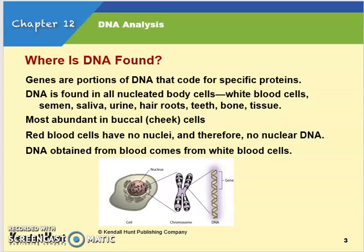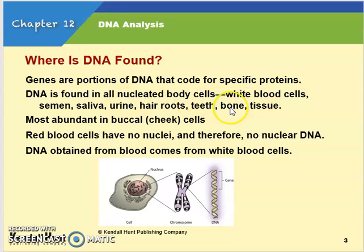Now that we've reviewed DNA, let's talk about where it is found. Genes are portions of the DNA that code for a specific protein, and DNA is found in nucleated body cells — cells with a nucleus. Those include white blood cells, semen, saliva, urine, hair roots, teeth, and bone and tissue. The most abundant are in your buccal or cheek cells. The nucleus is where the DNA is located, and DNA obtained from blood comes from white blood cells, not red.